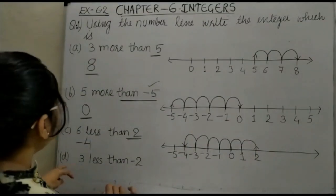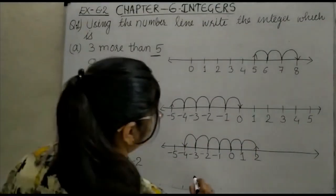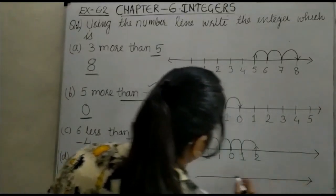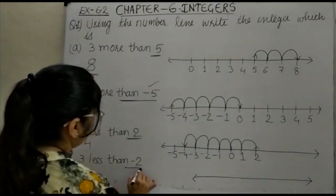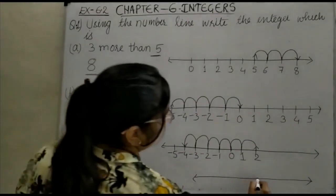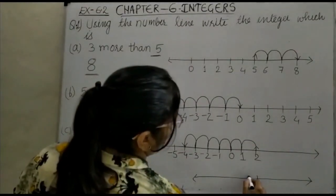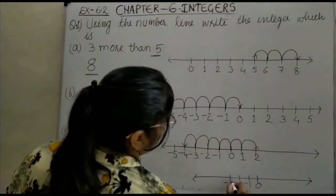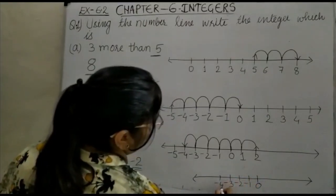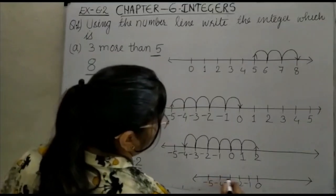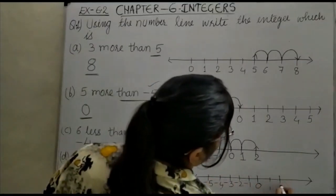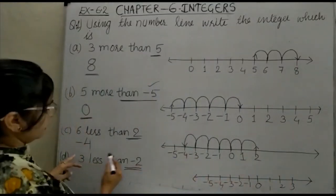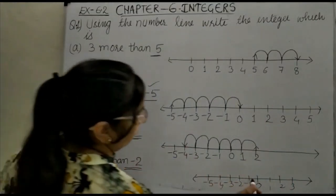Next is 3 less than minus 2. We plot the number line. We start from minus 2. This is 0, minus 1, minus 2, minus 3, minus 4, minus 5, then 1, 2, 3. We will start from minus 2, move 3 less — that means we move to the left.